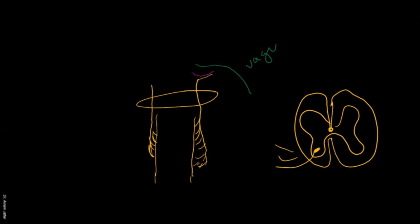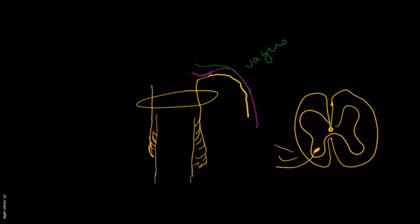I just want to remind you that nerve number 10 is the vagus. What's going to happen here is that for a short period of time, this cranial root of the accessory nerve is going to join the vagus, and its fibers continue with the vagus. What remains of the accessory nerve is the spinal root of the accessory nerve.